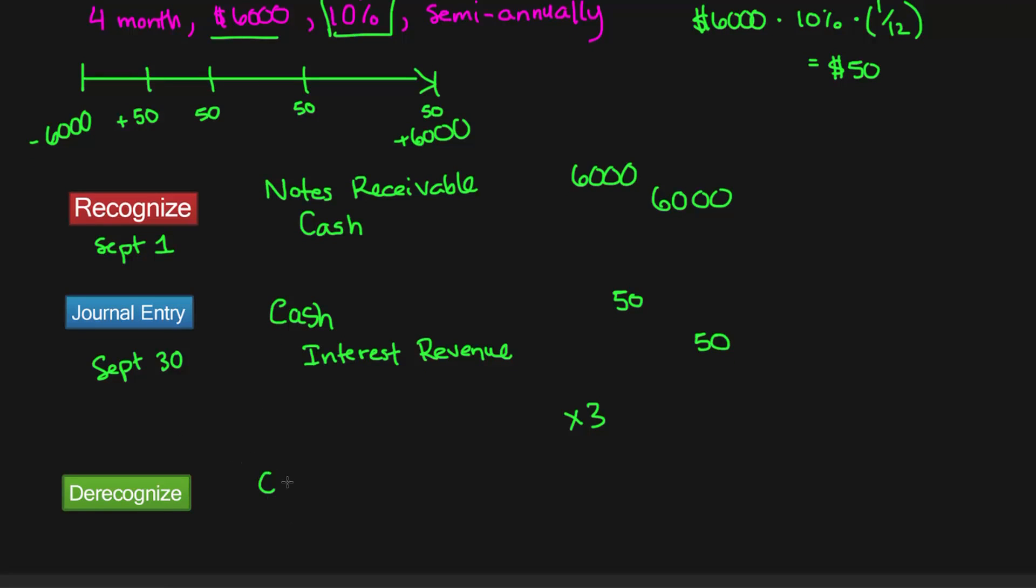The first way is we can do it all in one transaction: debit cash for $6,050—not $6,250 but $6,050—because we're collecting the interest payments as well as recovering the loan. On the credit side we're going to have notes receivable and also interest revenue because we've earned that amount. The notes receivable will be a credit of $6,000 and the interest revenue will be $50.